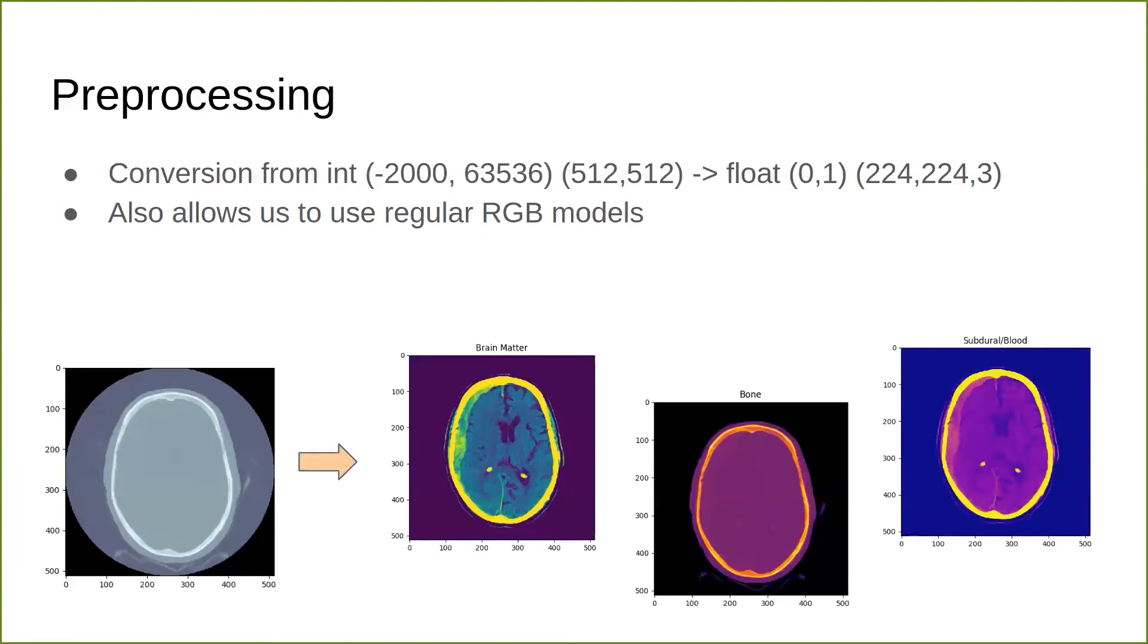Going into our methodology, preprocessing is an important step. As seen on the left, the raw CT scan image is almost featureless. It's very hard to tell what the brain tissue and blood structures in the brain look like. So we used windowing, which is a common method in CT image analysis, which manipulates the CT image grayscale in order to change the appearance and highlight particular structures.